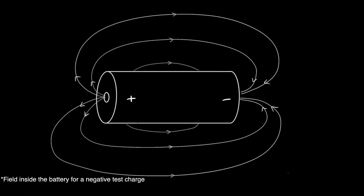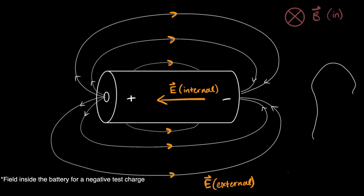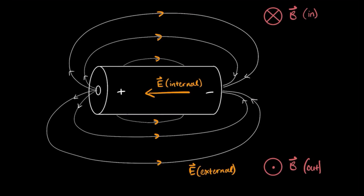If we look at the fields around the battery, the electric field points in the opposite direction to how it would within the battery itself. However, the magnetic field has the same direction as in the wire, since the flow of current hasn't changed. This makes sense since energy flows out of a battery. The amount of energy the battery loses to the electric field is the same amount that the wires, and therefore the load, gain from the field.